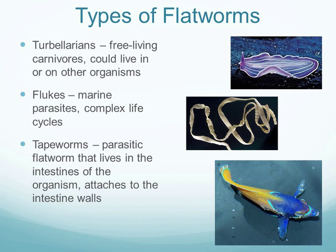Types of flatworms include turbellarians — free-living carnivores crawling along the ocean floor. Flukes are marine parasites that live on fish and other marine organisms, appearing as white dots on fins. Tapeworms are also parasitic, living within intestinal tracts and attaching to intestinal walls to feed off digested food — they can get quite long.